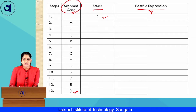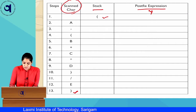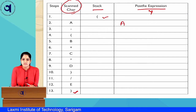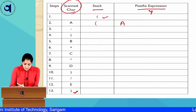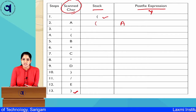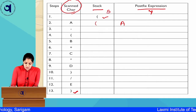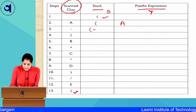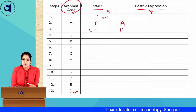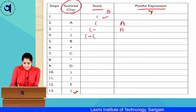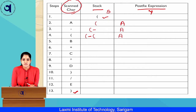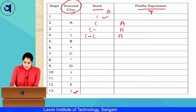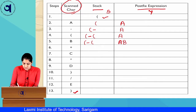The first scanned character is A, which is an operand, so we push it to the postfix expression Y. Next is minus, which is an operator, so we push it onto stack S — we now have bracket and minus on the stack. Then comes an opening bracket, so we push it onto the stack: bracket, minus, bracket. Then B is an operand, so we push it to Y — now Y contains A and B.